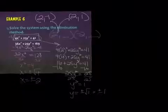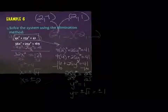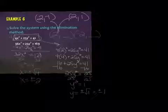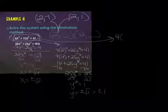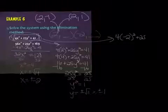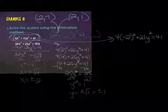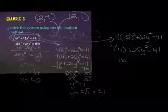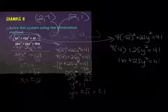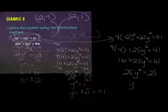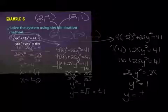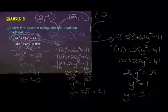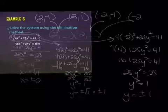Student question: Why didn't you plug the 2 back into the other equation? Answer: It doesn't matter — you can plug it back into either one. Now I've got to plug in my negative 2. 4 times negative 2 squared plus 25y squared equals 41. What's the difference between squaring positive 2 and squaring negative 2? Nothing. So it's going to be the exact same thing. This also gives negative 2, negative 1 and negative 2, positive 1.